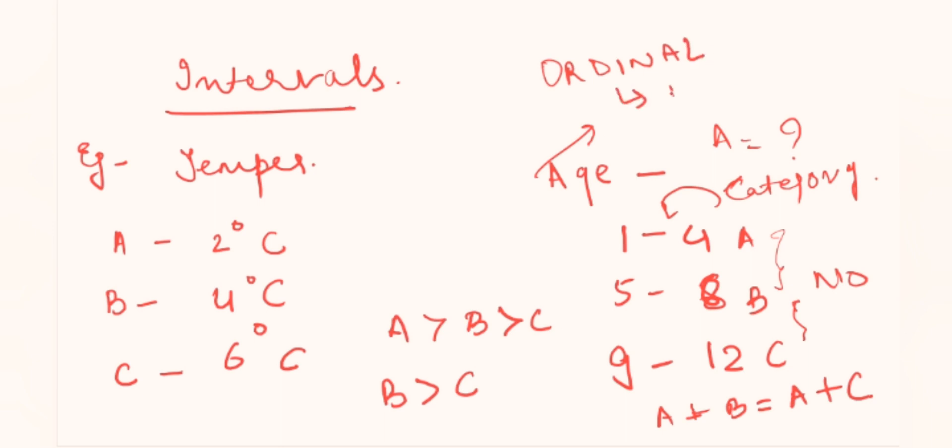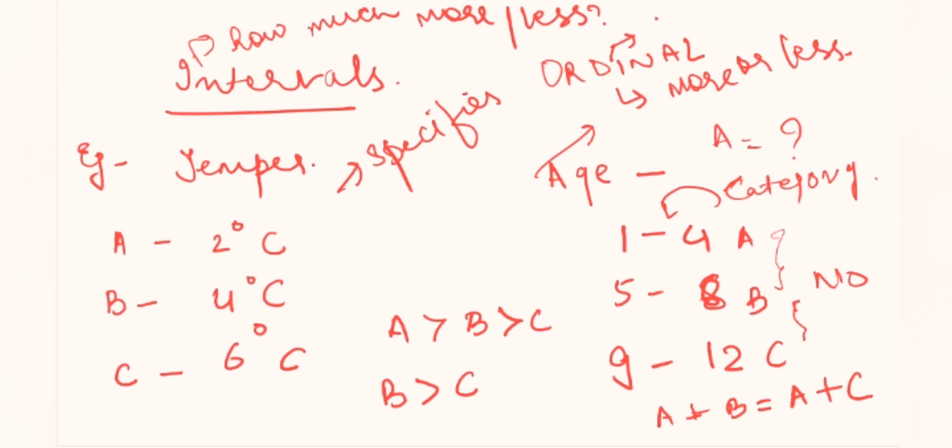Ordinal always says more or less. Intervals says how much more or how much less. It specifies and it just says yes, yeh isse bada hai, yeh isse chota hai, kitna chota hai and kitna bada hai. Like how much tells the intervals. So this example is clear with the ordinal and interval.